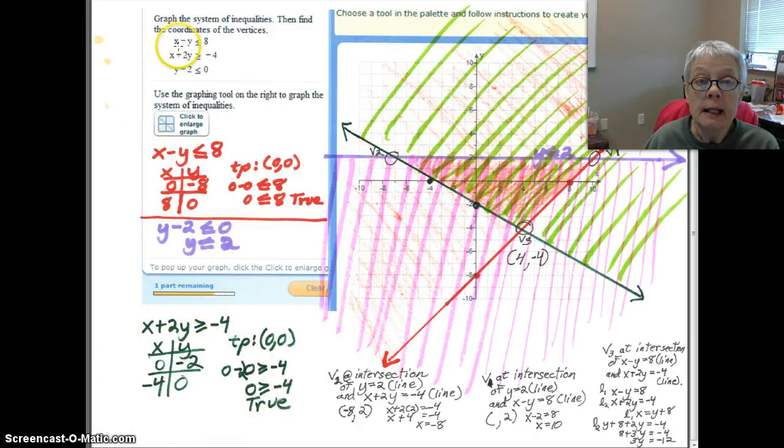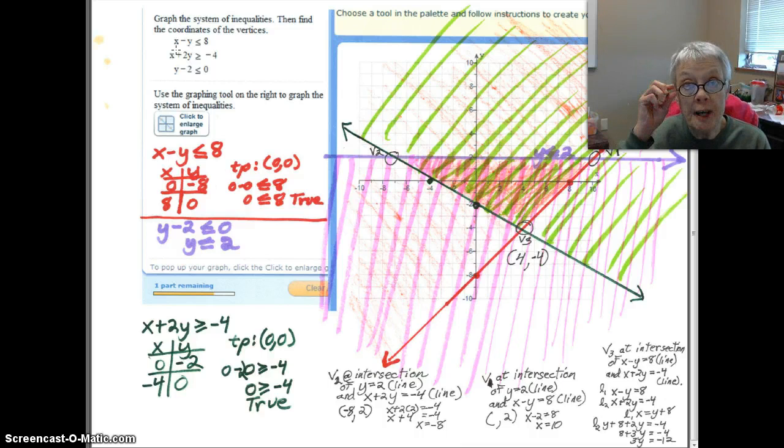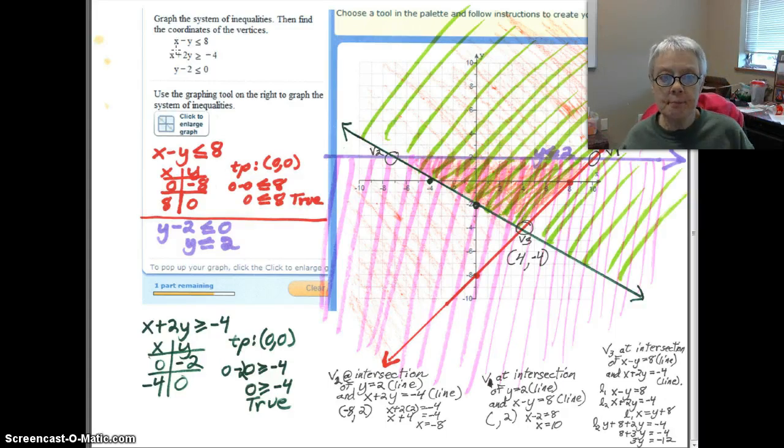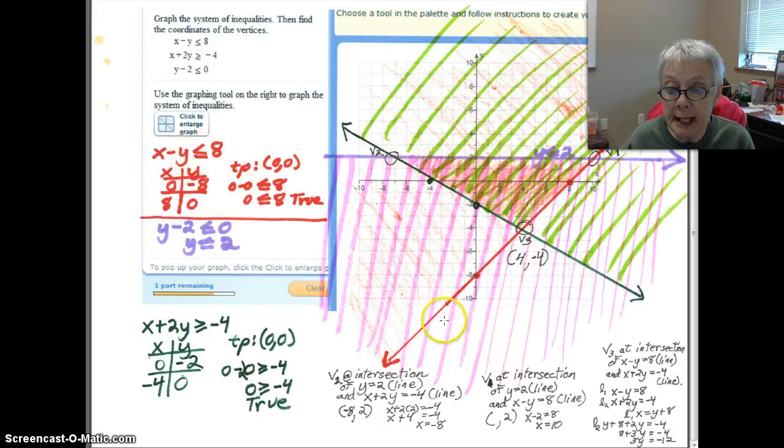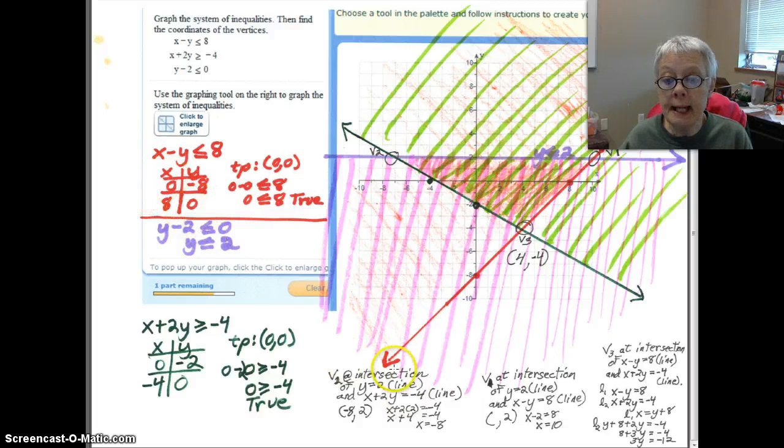So how do you graph the solutions to linear inequalities in two variables, which is the technical name for this? Well, here's how you do it. First, you graph the line just as though this were X minus Y equals 8. So here's X minus Y equals 8. I found two points and I graphed a line between them. It's a solid line because this is less than or equal to.